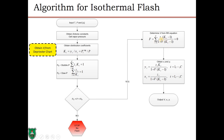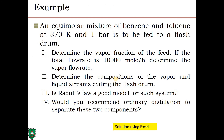Once V is obtained from solving the Rachford-Rice equation, evaluate Yi and Xi using the derived expressions. As an example, consider an equimolar mixture of benzene and toluene (Z_benzene = 0.5, Z_toluene = 0.5) at 370 K and 1 bar fed to a flash drum. Determine the vapor fraction, and if the total flow rate is 10,000 mol/hr, determine the vapor flow rate and the compositions of the vapor and liquid exit streams.